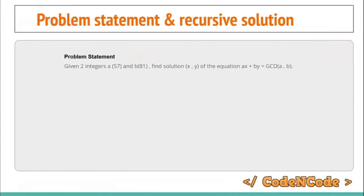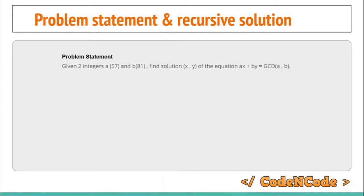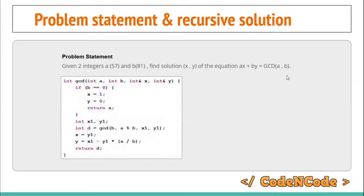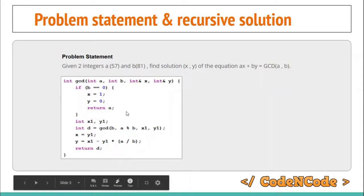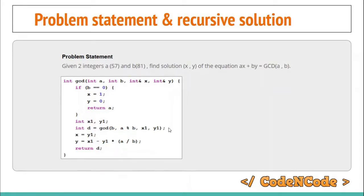The problem statement and example are the same as in the previous lecture: given two integers a and b, find the solution x and y for the equation ax + by = gcd(a, b). The algorithm shown here has the GCD function taking four parameters: a, b, x, and y.